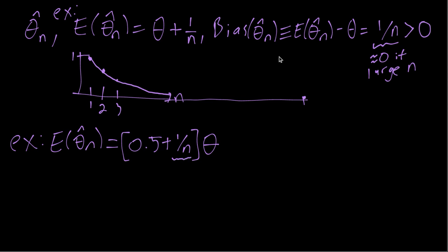For large n. Then if we just plug in 0 there, you can see we would get 0.5 theta. So we would still have this attenuation bias even with large n. Or in other words, this estimator not only has finite sample bias, but is also asymptotically biased toward 0.